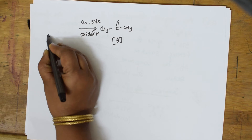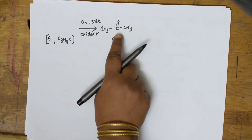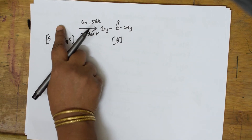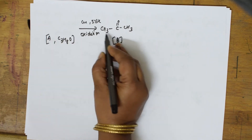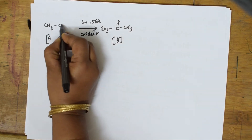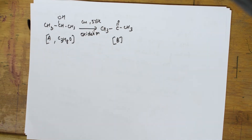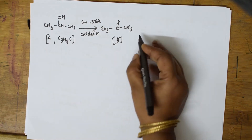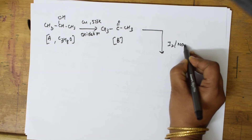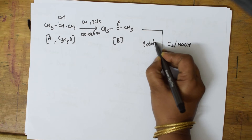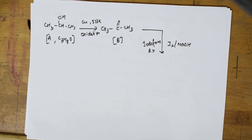Primary alcohols on oxidation give aldehydes; secondary alcohols on oxidation give ketones. Since B is a ketone, A must be a secondary alcohol. The formula given is C3H8O, so write the secondary alcohol: CH3-CH(OH)-CH3. This compound was treated with I2 and NaOH — the iodoform reaction — giving a yellow precipitate.